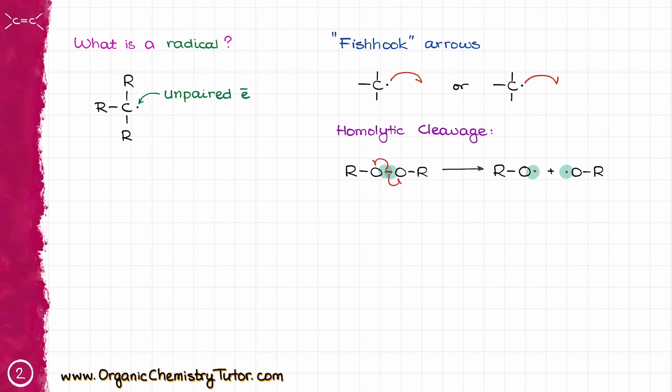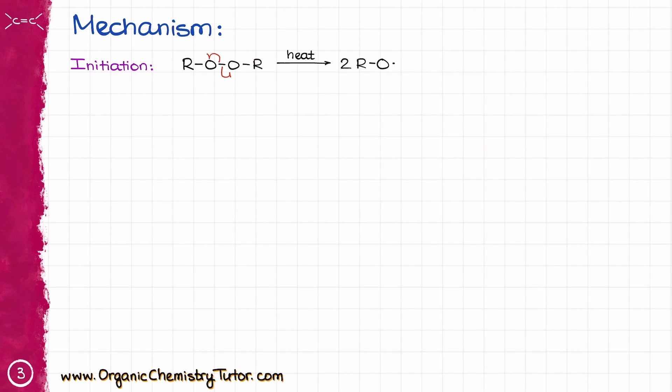Alright, so now when we have refreshed our memory of how to operate with radicals, let's dive into the mechanism of radical hydrohalogenation. And as with any radical reaction, we are going to start with the initiation step. Initiation step is the one that creates radicals. Before the initiation step we did not have any radicals, now we do. And here is where the organic peroxide is going to break into two initial radicals.